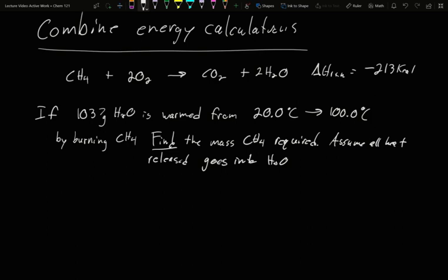In this video, we're going to combine the different types of calculations for energy. So we have a reaction: methane plus dioxygen goes to carbon dioxide and water. The delta H of that reaction is negative 213 kcals.